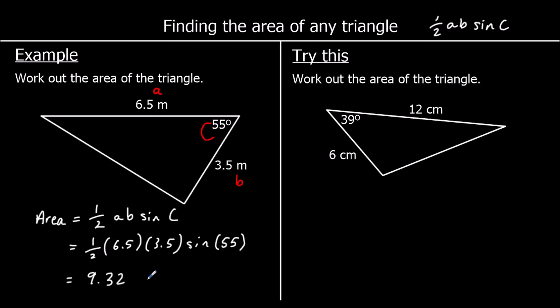And what are the units? The lengths are in meters, so area is in meters squared. So 9.32 meters squared to two decimal places.